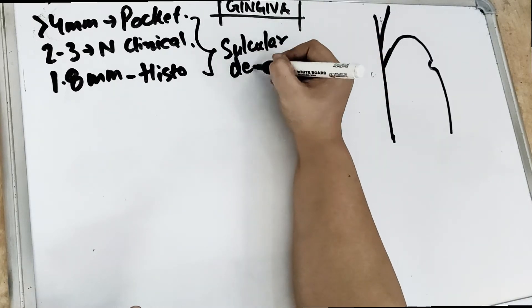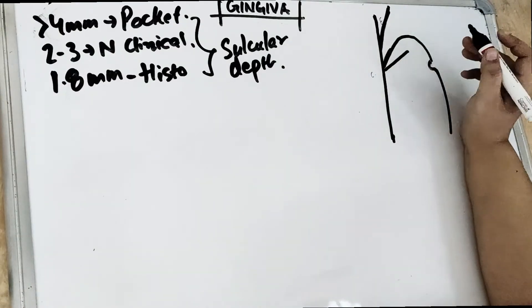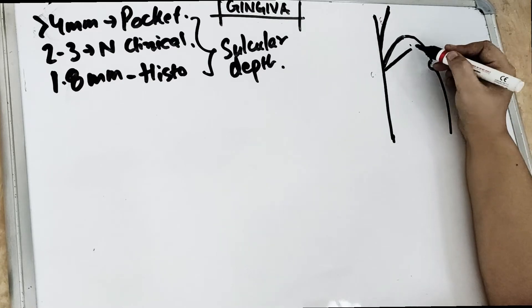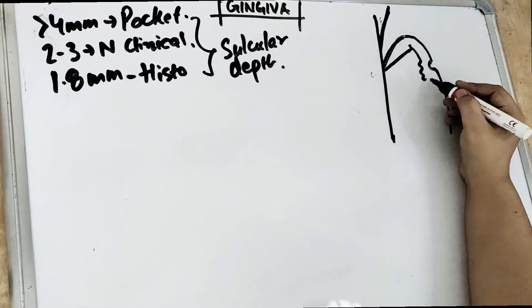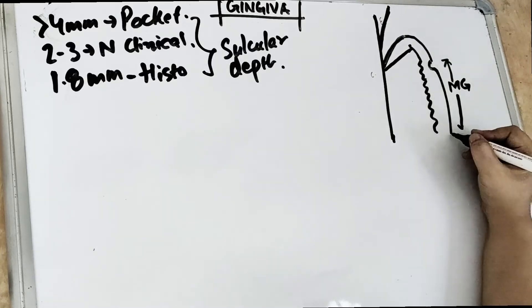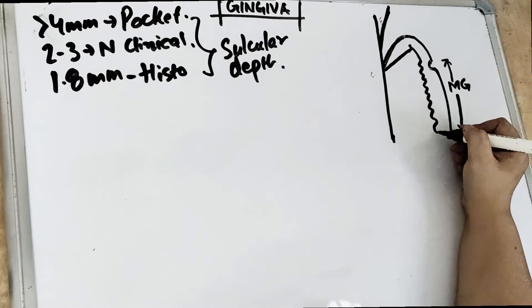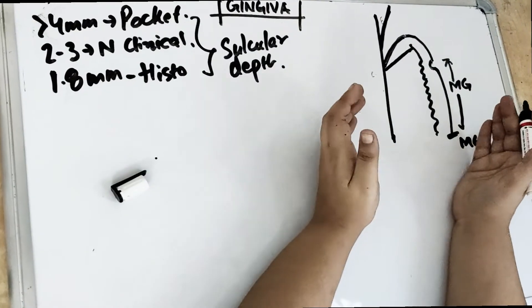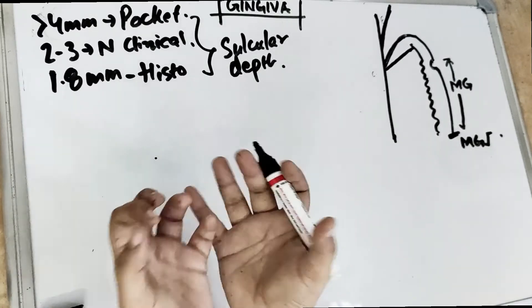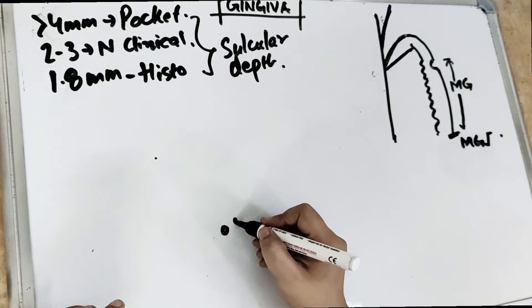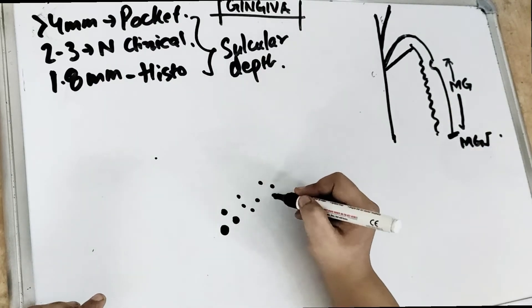Also, this part — the sulcular epithelium — is straight. The free gingiva is straight. After that there are rete pegs, which I told you are in the marginal gingiva — from the free gingival groove up to our mucogingival junction. Because of these rete pegs, we see stippling. This gingiva we are looking at from the inside view. If there are depressions and holes from inside, then outside we see slightly wavy, microscopic protuberances. That is why we see stippling in the case of marginal gingiva.